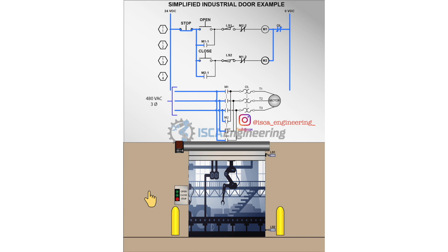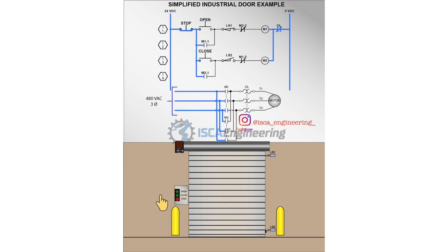The same concept is used to bring the door down. Pressing the down button will energize the second motor starter and reverse the rotation of the motor in order to bring the door down. After the door has reached its limit and actuated limit switch 2, the limit switch will open and stop current from flowing to the motor. The stop button can be pressed at any time whenever the door is going either up or down to stop the current from flowing to the motor. If both the up and down buttons were to be pressed at the same time, then the door would not move at all.